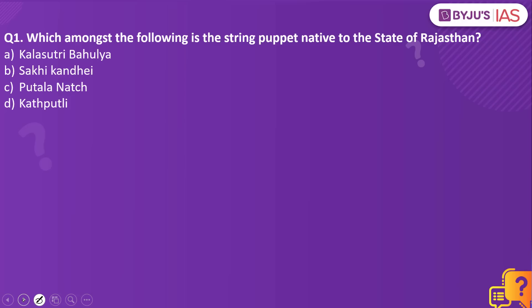Let's look into the first question. Which amongst the following is the string puppet native to the state of Rajasthan? Options: Kalasutri Bahulya, Sakhi Kandai, Putla Naach, or Kathputli? The answer to this question is Kathputli.